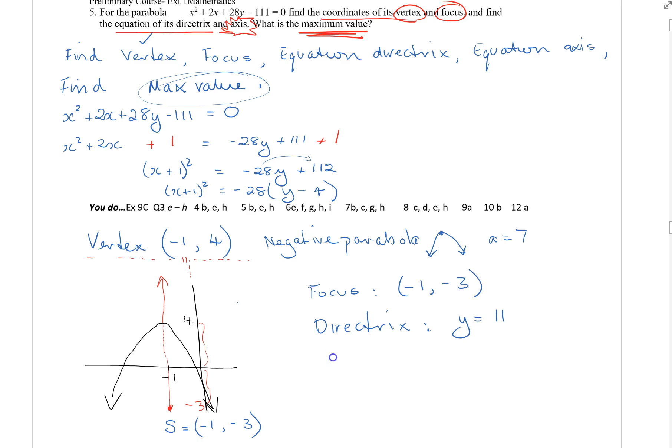I might actually write that over here: focus is minus 1, minus 3. So the equation of the directrix I've done. The equation of the axis, now that nicely comes from the diagram. So I'd say axis equation, that's a vertical line that will have an equation x equals, and it's going through minus 1, so it's x minus 1.